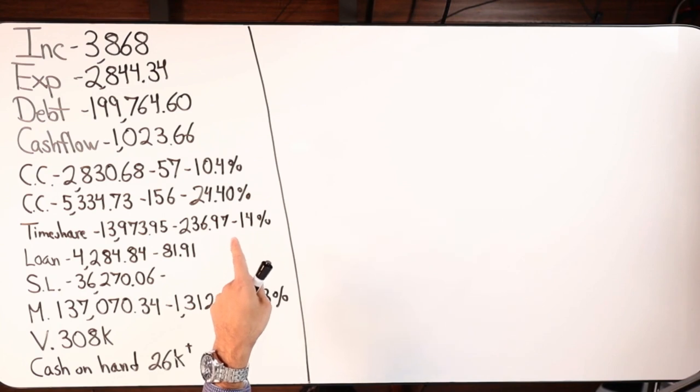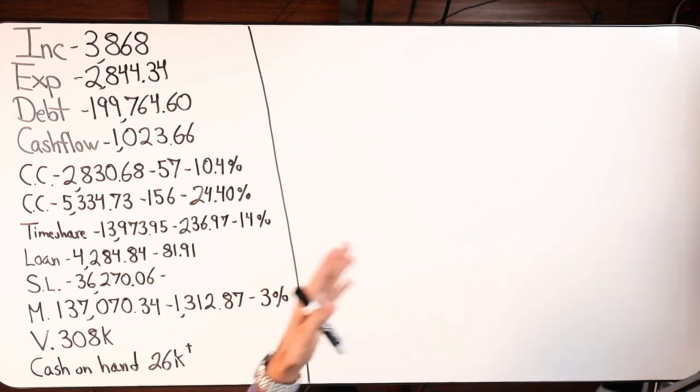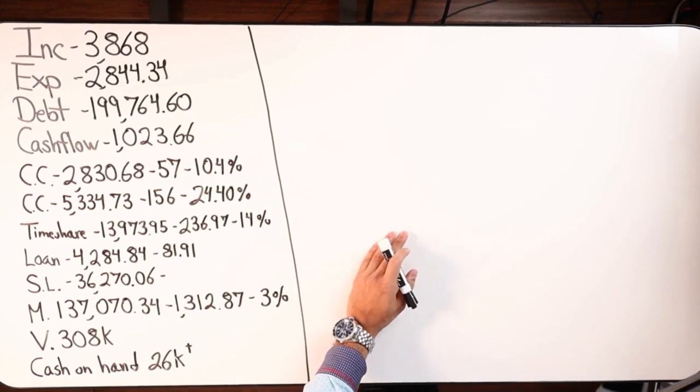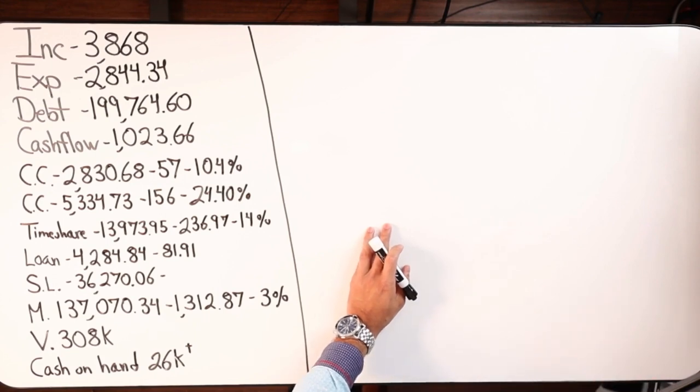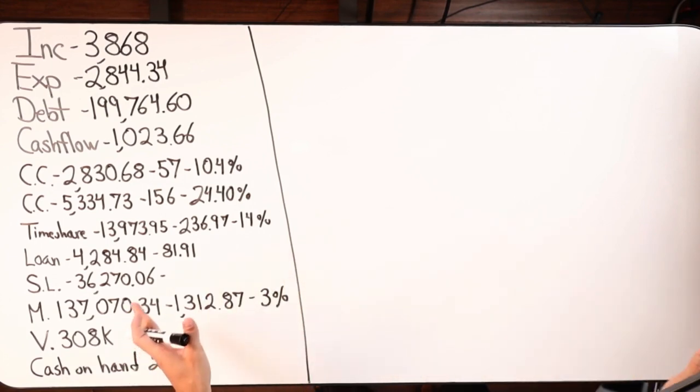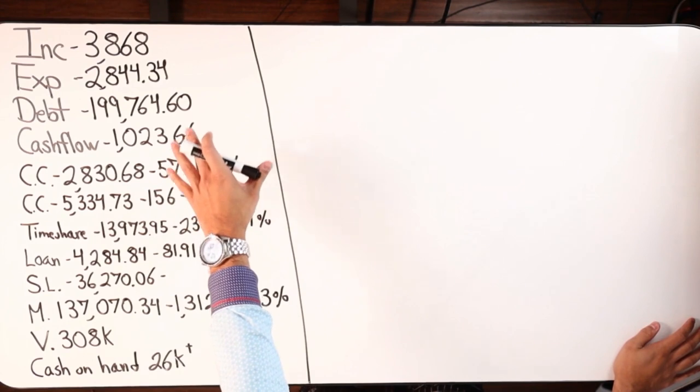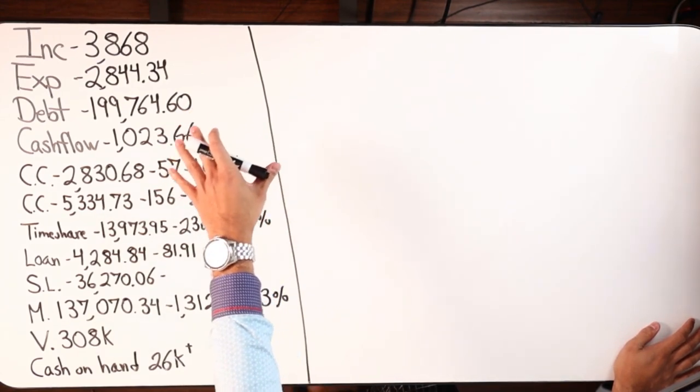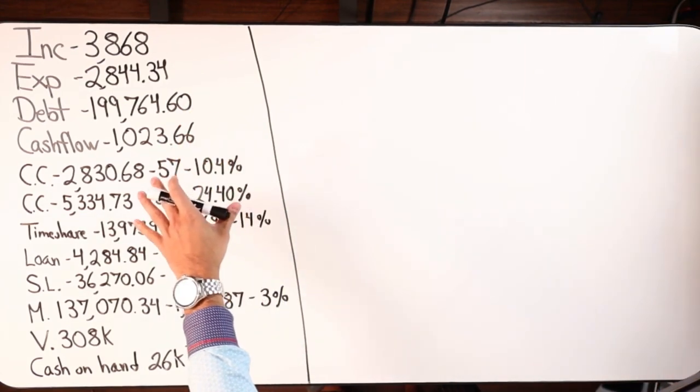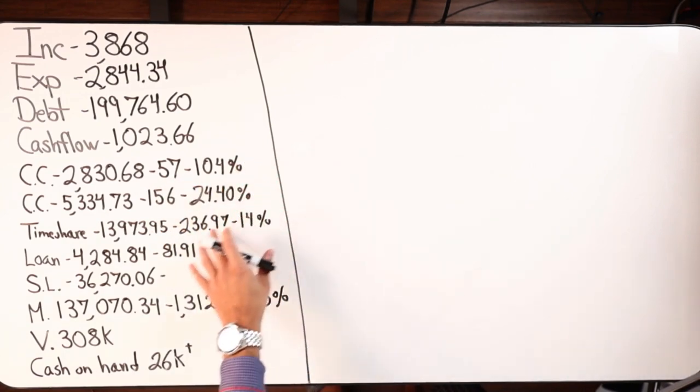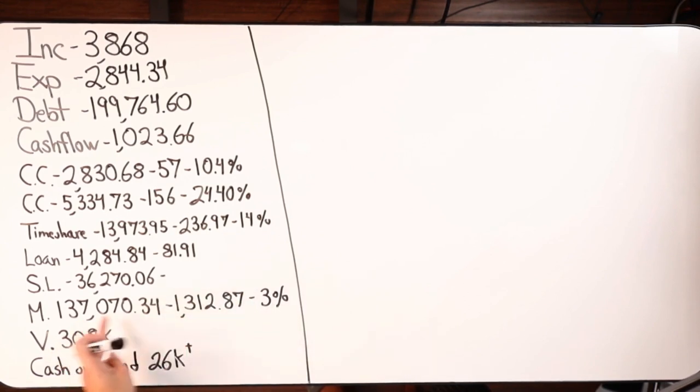Person does not have a debt tool yet. They also have a savings account with Hartford Federal Credit Union. Here are their numbers: making just under $4,000 monthly, total debt just under $200k. They've got two credit cards, a timeshare, a loan, student loan, mortgage at 3% rate, home valued at $308,000, and $26,000 plus cash on hand.